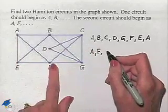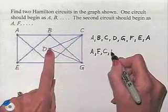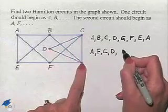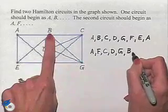Here we're going to go A to F, and then we're going to go up to C. We're going to go to D, then we're going to go to G, up to B, E, and then A.